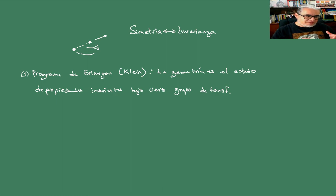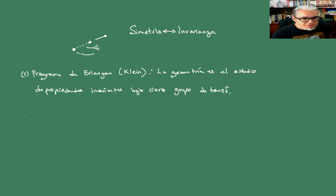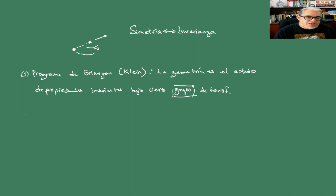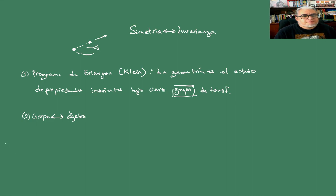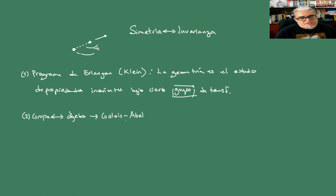Vamos a hablar de invarianza: una propiedad es invariante si, cuando aplicamos cierta familia de funciones, la propiedad puede escribirse de la misma forma. Si la propiedad se escribe con una desigualdad, la desigualdad tiene que sostenerse; si se describe con una ecuación diferencial, la ecuación tiene que sostenerse después de aplicar la transformación. El concepto de grupo proviene del álgebra, y originalmente se le debe a Évariste Galois y a Niels Henrik Abel. Lo que ellos estudiaron fueron invariantes de polinomios.